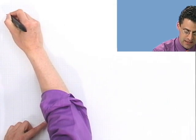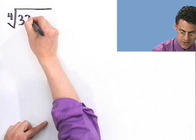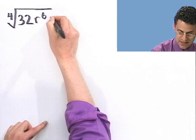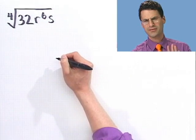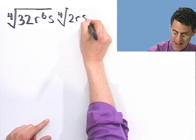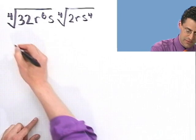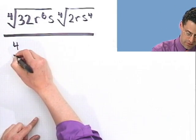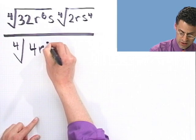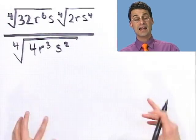Let's try another one — wait until you see this. We take the fourth root of 32r to the sixth times s, multiplied by the fourth root of 2r times s to the fourth, and all of that divided by the fourth root of 4r cubed times s squared. That is a big problem, and I want to simplify it down to something more manageable.